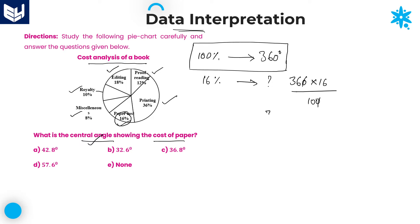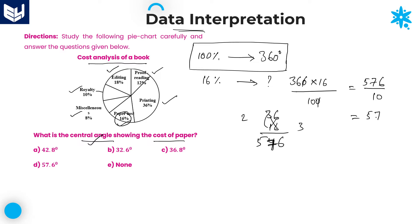Multiplying 36 into 16: 6 times 6 is 36, carry 3; 3 times 6 is 18 plus 6 is 24, plus 3 is 27, carry 2; 3 times 1 is 3, plus 2 is 5. Result is 576. So 576 divided by 10 equals 57.6 degrees. That is the required answer. Option D is the right answer: 57.6 degrees.